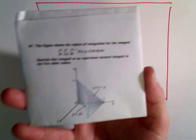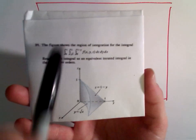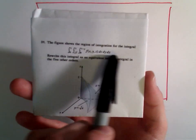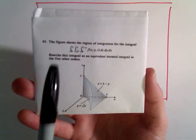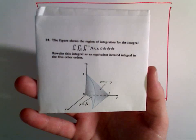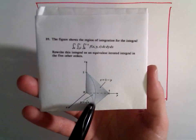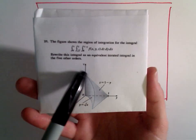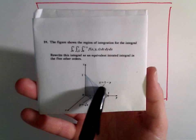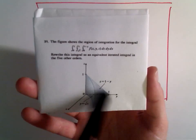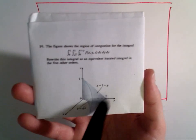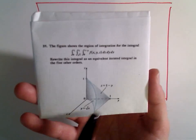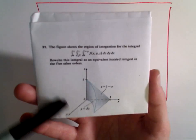I've got an extra diagram I've sketched. The figure shows the region of integration for the integral: from 0 to 1, root x to 1, 0 to 1 minus y, of f(x, y, z) dz dy dx. So we're integrating some function over this three-dimensional domain, and we're going to rewrite this integral as an equivalent iterated integral in the five other orders.